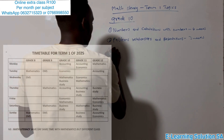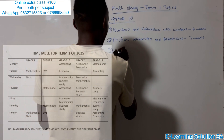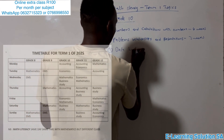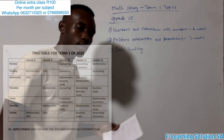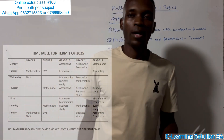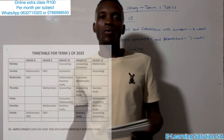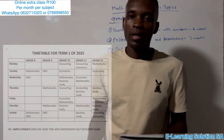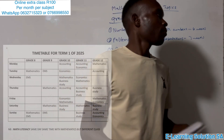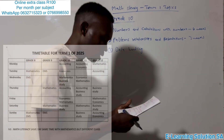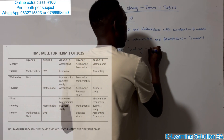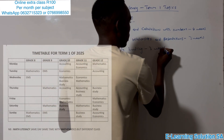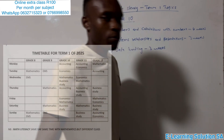Topic number three is a very simple chapter which we call Data Handling. Under Data Handling, you are going to calculate a mean, a mode, a median and a range. You will be given only three weeks to cover it.